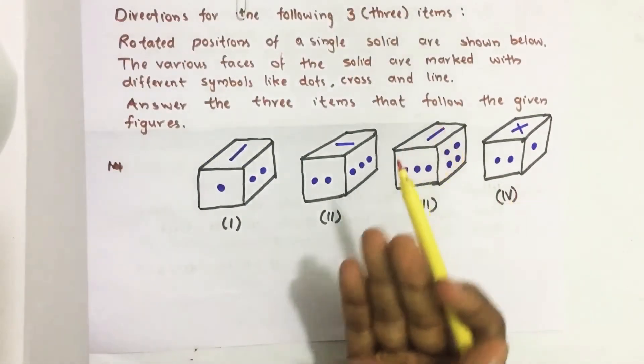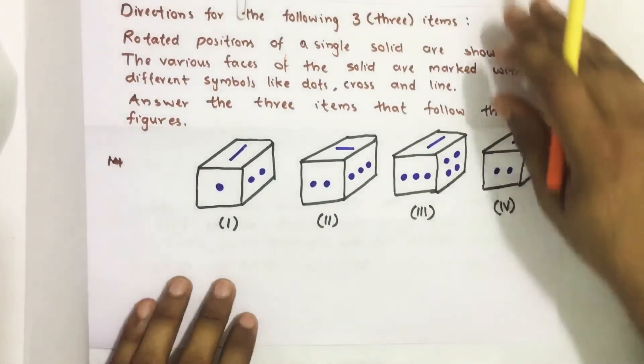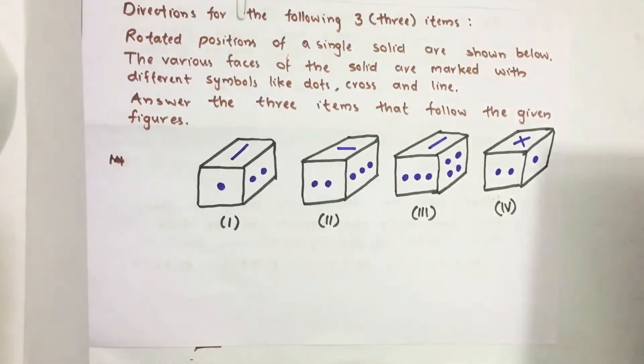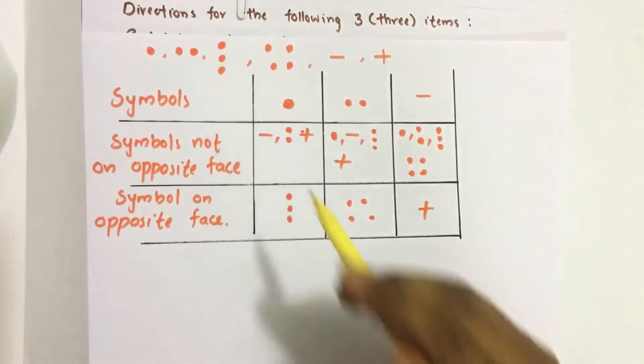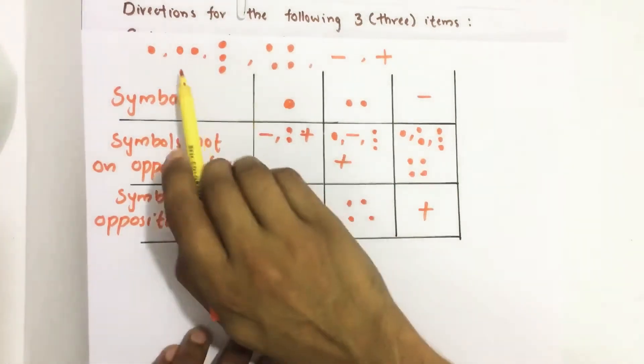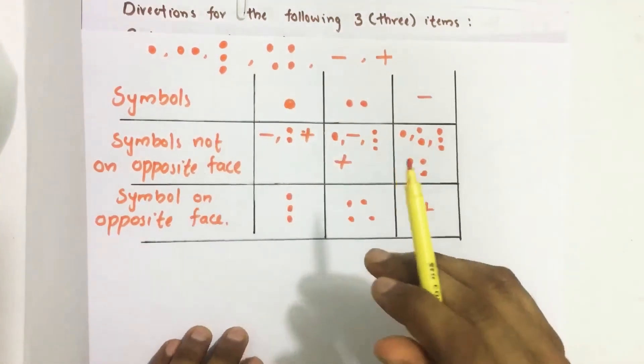So in this question we have to find the symbol on the opposite face. So how to do this easily without any mistake. For that, here I draw a table. These are the six symbols on six different faces of that block.